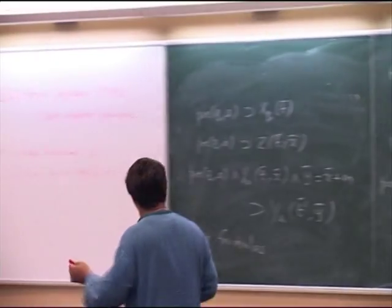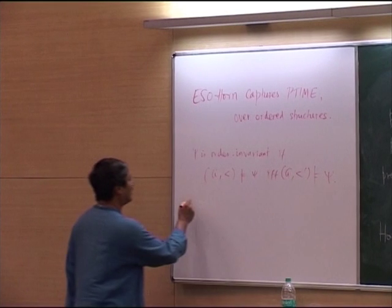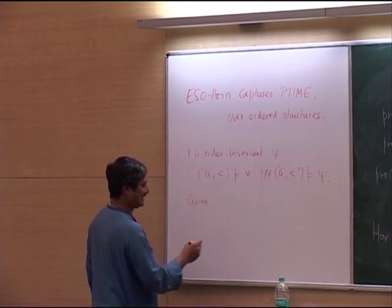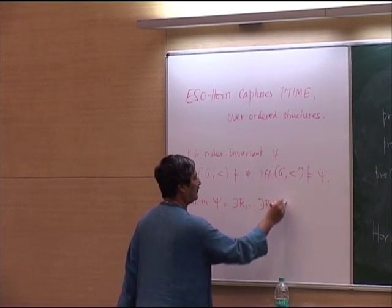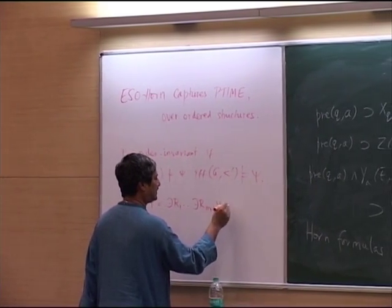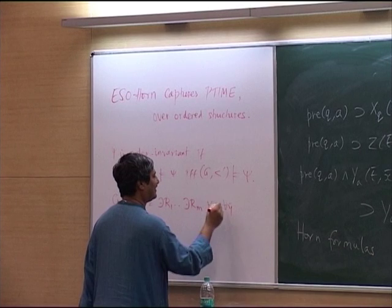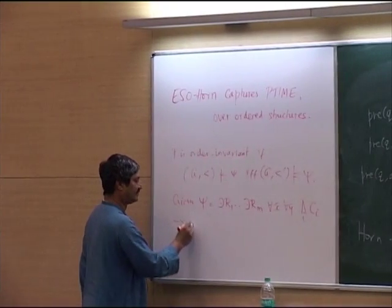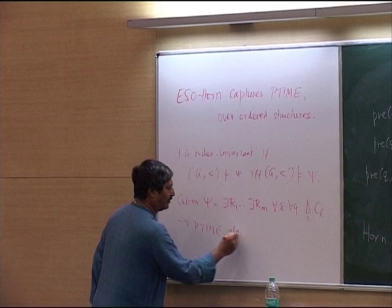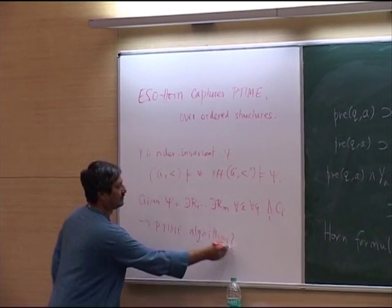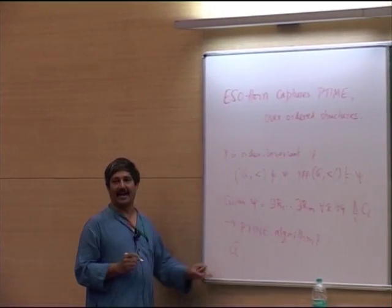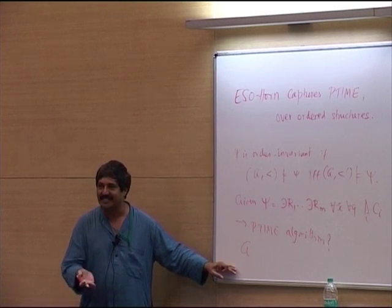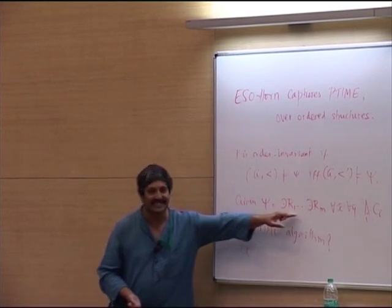What about the converse? Given a sentence of this form — for all X — I want a P-time algorithm. I have an input structure A, and we want a Turing machine that takes structure A and checks this fixed sentence. The input to the machine is codes of structures.